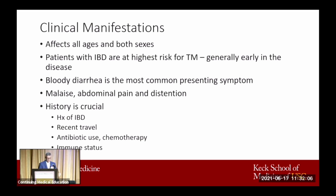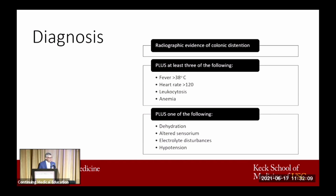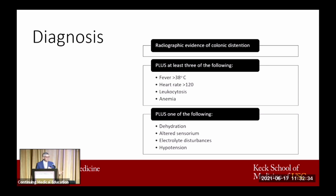To make the diagnosis, it's kind of threefold. You need radiographic evidence of colonic distension, and we'll talk about that in a minute. Plus you need a couple of other things: fever, an elevated heart rate, leukocytosis, and anemia — the anemia obviously coming from the bloody diarrhea. And then, according to the papers and the text, you need one of the following: dehydration, altered sensorium, electrolyte disturbances, or hypotension. If you have those, you've got to be thinking about this and being prepared to get into surgery if necessary.